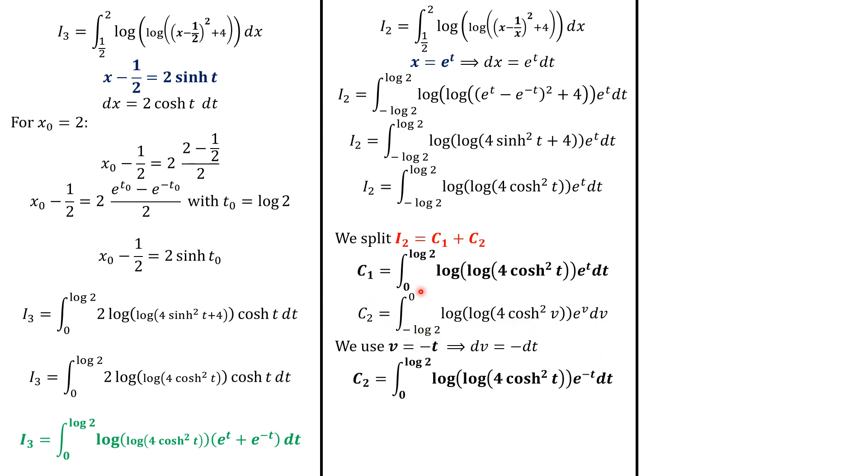Because this is 2 times sinh of t. And I2 is equal to this integral. But the issue we have here is that the integral is going from negative log 2 to log 2. So what we can do is to separate I2 in two parts. So c1 is going to be this integral from 0 to log 2. And c2 is going to be the integral from negative log 2 to 0. So we want to do something with c2. So here we use a simple variable change. We set v equals negative t. So that dv equals minus dt.